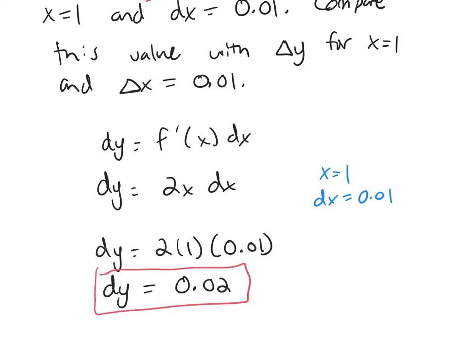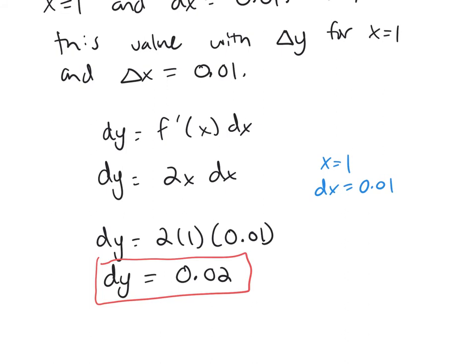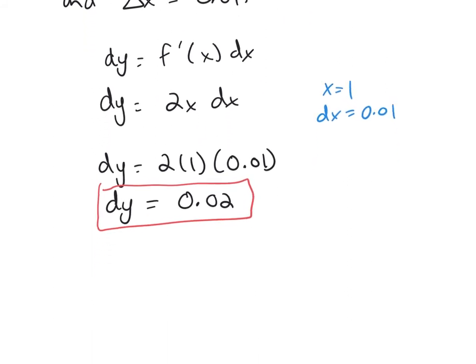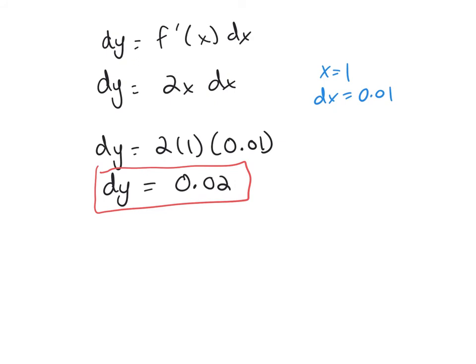So we've done half of what was asked for us. We were asked to find dy, which we did find, but now we were asked to find delta y. So delta y, it's f of x plus delta x minus f of x. So delta y,